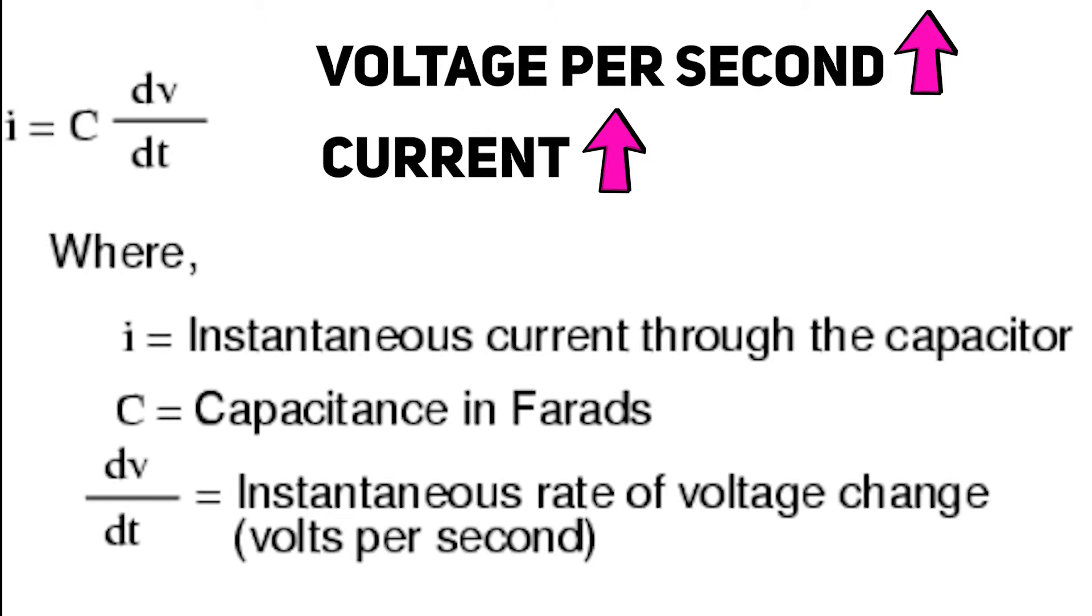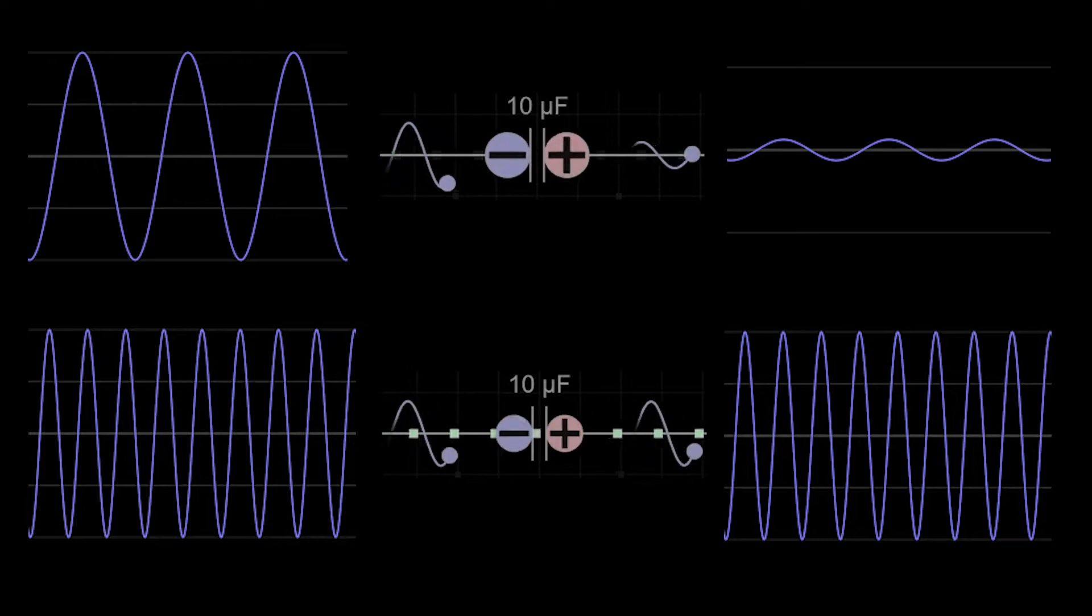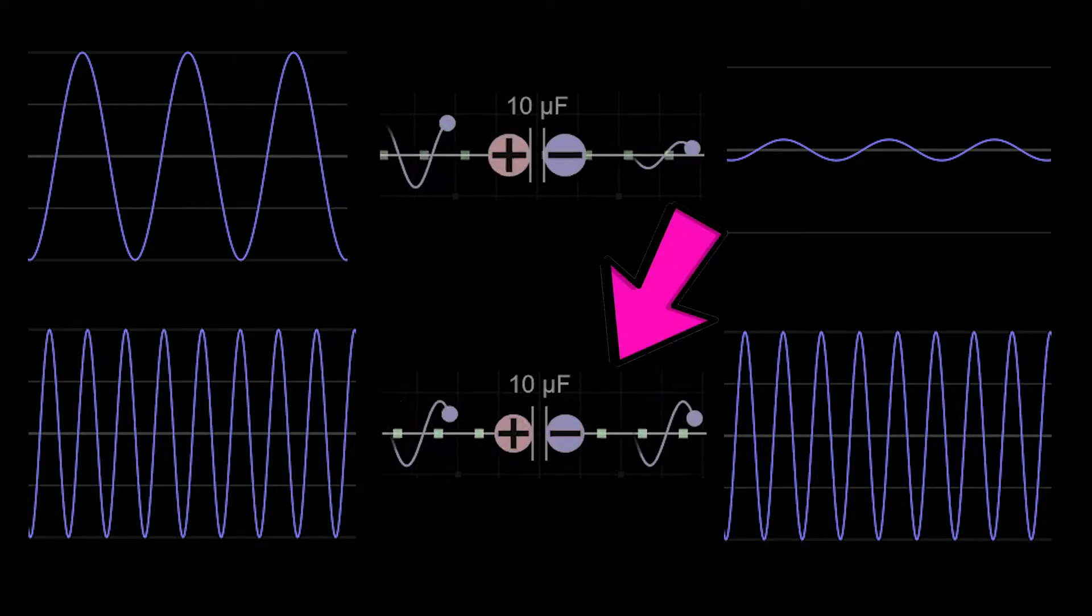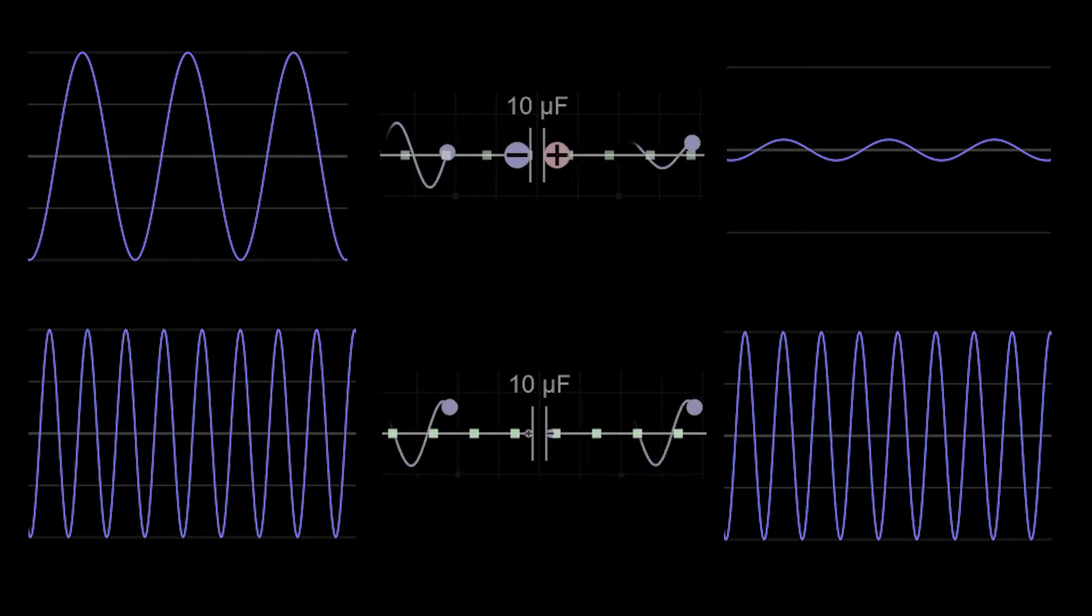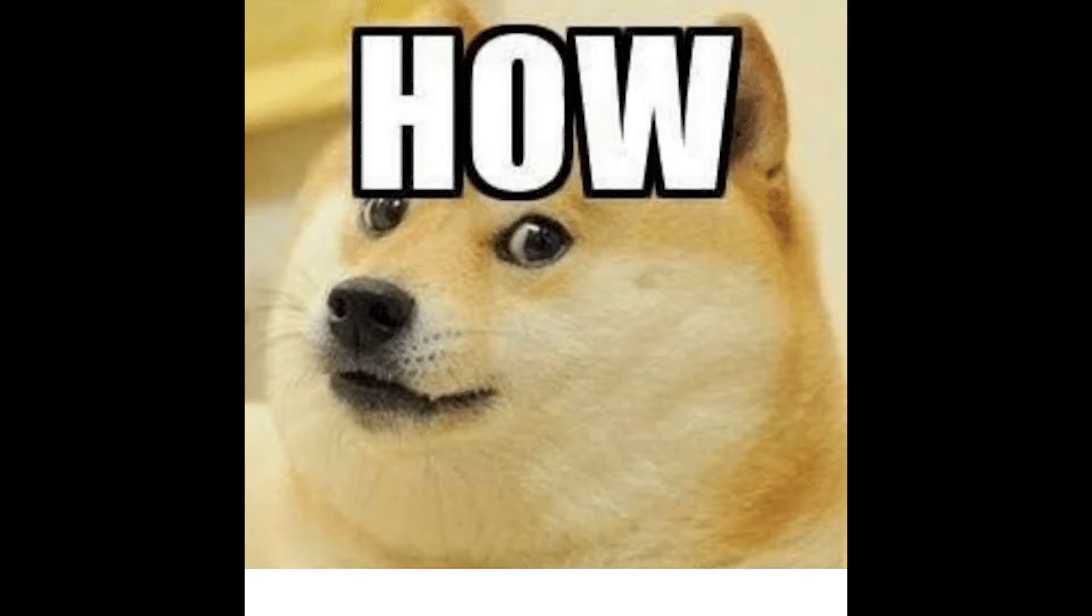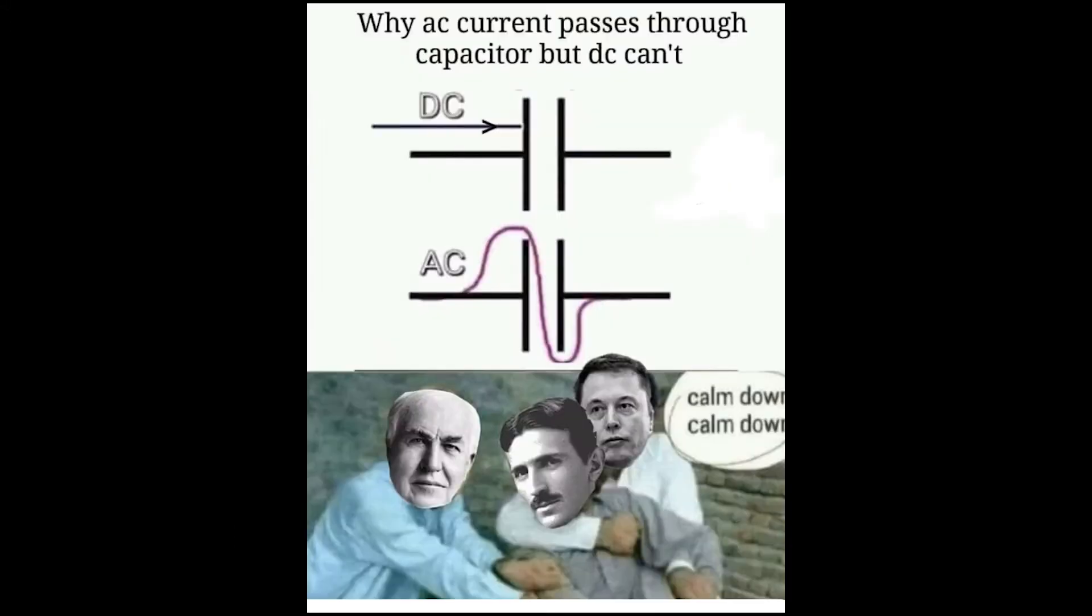Imagine you transferring 1000 charges from one plate to another. If you transfer them fast, which is equal to high current, voltage across capacitor plates will also rise fast. But why do I discuss all this basic capacitor stuff when you just wanted to know how does a capacitor let AC current flow? Because now you will easily understand how.